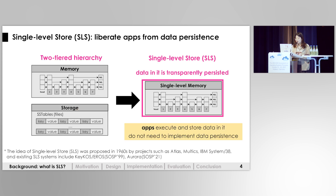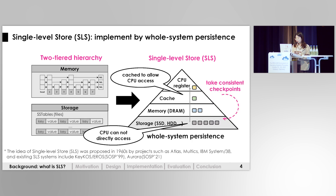Single-level storage is proposed to liberate applications from the complex data persistence. It provides a single-level memory abstraction for applications to execute and store data. Single-level storage guarantees that data in this single-level memory is transparently persisted, so applications do not need to implement data persistence themselves. Existing systems use whole system persistence to provide this abstraction, where each state of the system has a specific location in the storage device, ensuring persistence of the whole system.